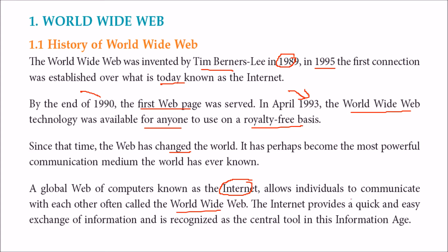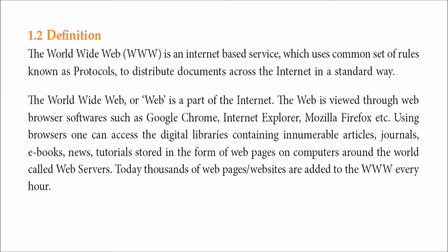The worldwide web allows us to communicate and share information very quickly, making it a paradigm shift in the information age. WWW is actually an internet-based service which uses protocols to distribute documents and other media across the internet. The web is viewed through an application program known as a browser — such as Google Chrome, Internet Explorer, or Mozilla Firefox.